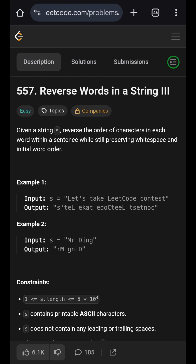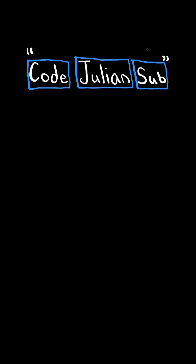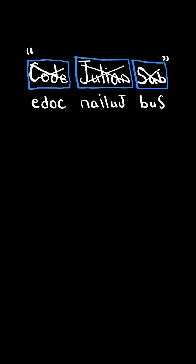Reverse words in string. Given a string of words, reverse the order of characters in each word. For example, we will reverse the characters in the word 'code', likewise we will reverse the characters in the word 'Julian', and lastly we do the same for the word 'sub'. Finally, return the new string.